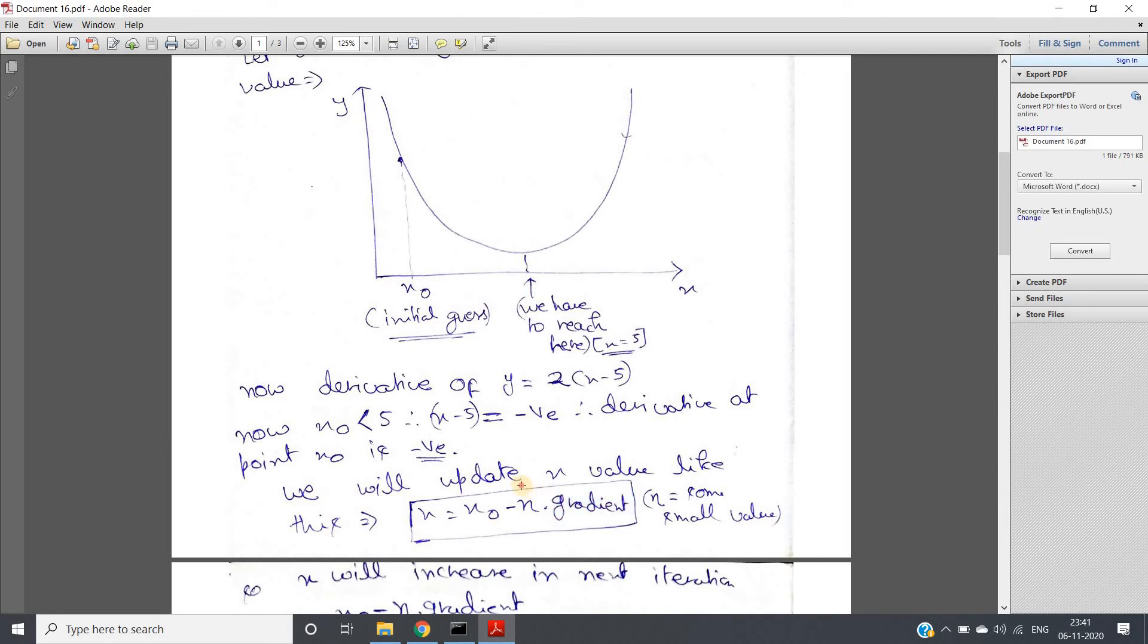Suppose initially at one particular iteration you are here, but due to huge change you might overshoot your optimal minimum point and you might come here. Like this it might happen. So the presence of multiplication factor in this m